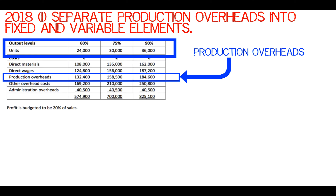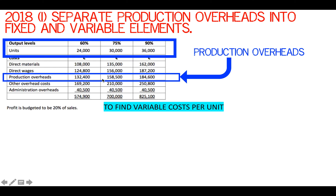To separate production overheads into fixed and variable elements, we are going to use the high-low method. It's a very easy method to use — you just need to remember how to do it. To find the variable cost per unit, we find the variable cost first, and then we'll be able to find the fixed element of it.